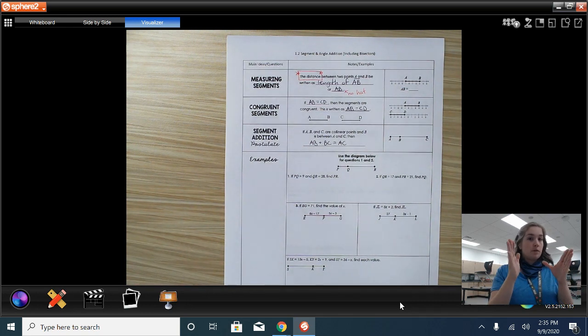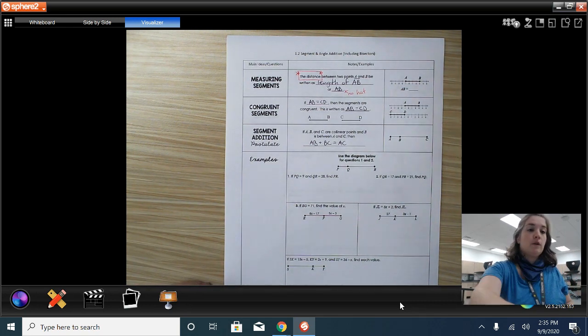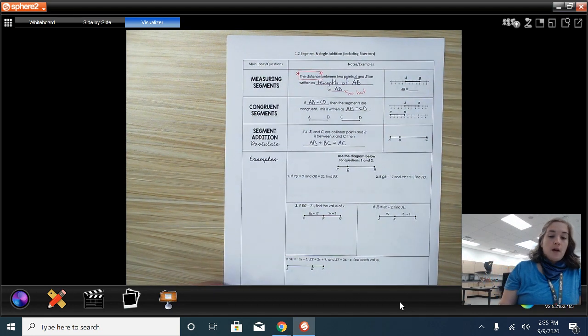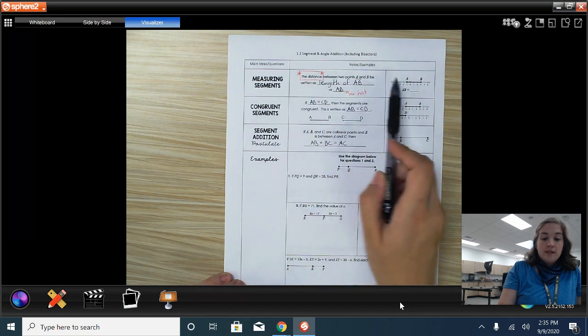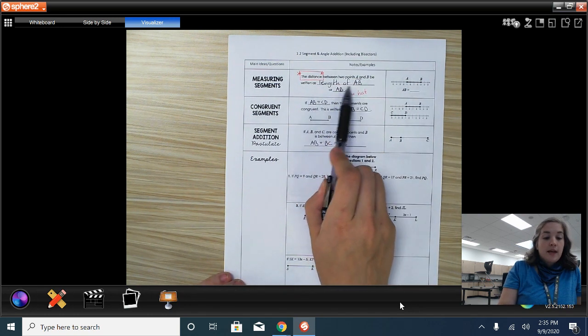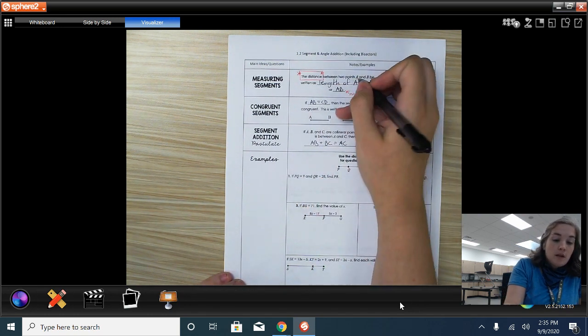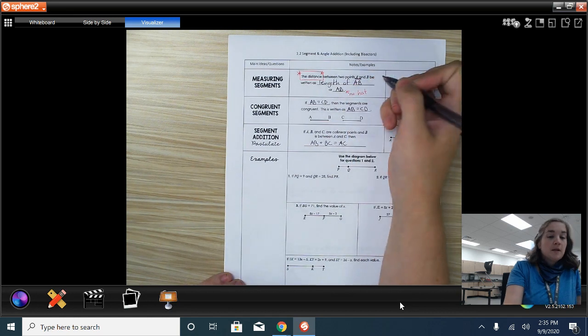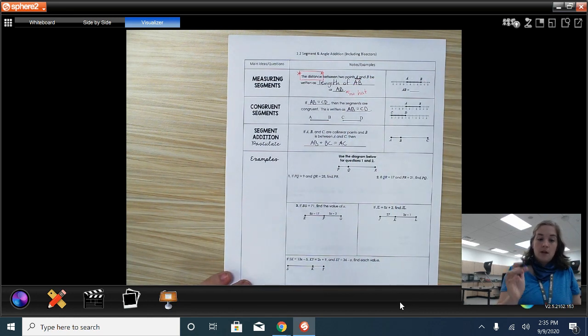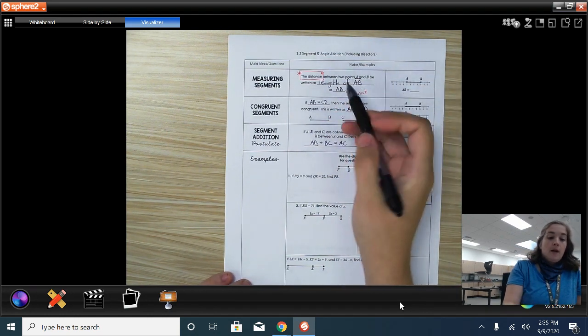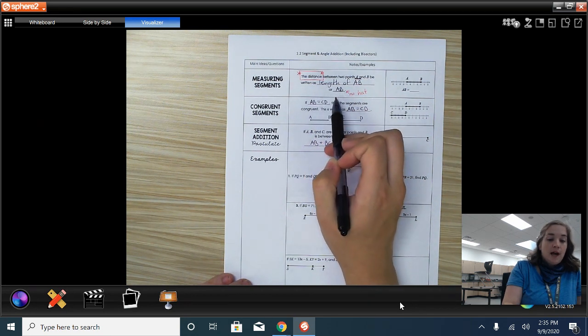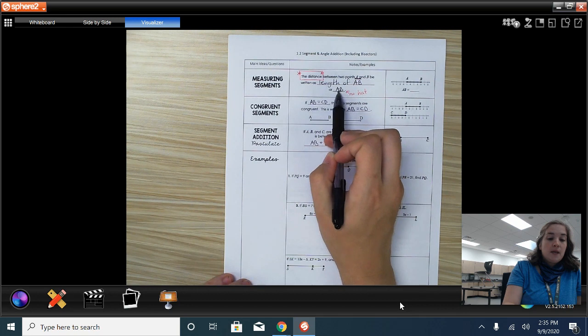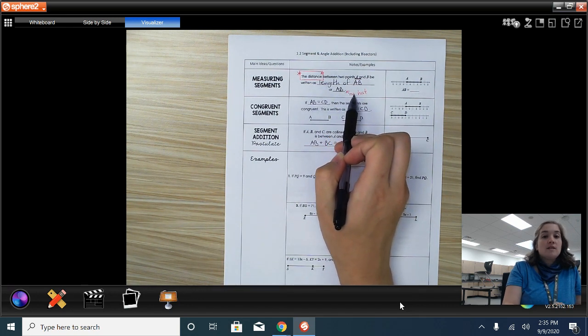Remember, segments are just a portion of a line. When we are looking at this, for example, we're going to start by talking about the distance. The distance between two points, A and B, can be written as the length of AB. You'll notice that AB has that hat, right? We're talking about a segment, so it doesn't have arrows. It's got that nice hat, though. Instead of writing length, we can just write AB without a hat. When we talk about AB and no hat, that always means distance.